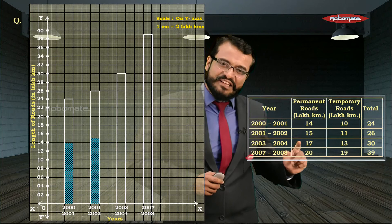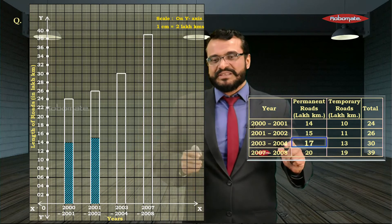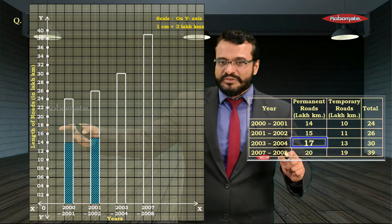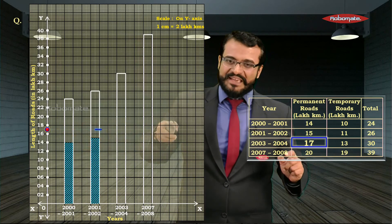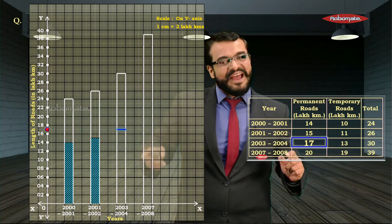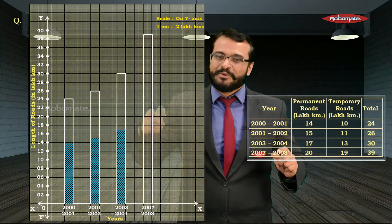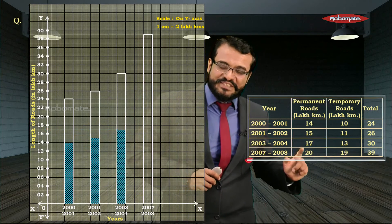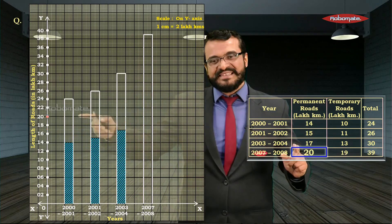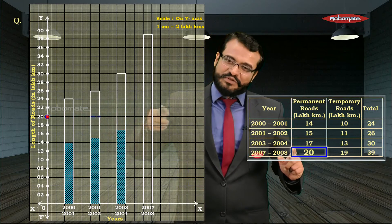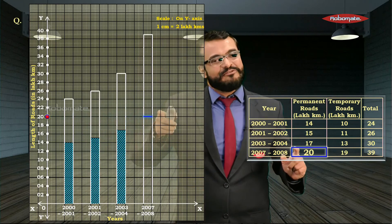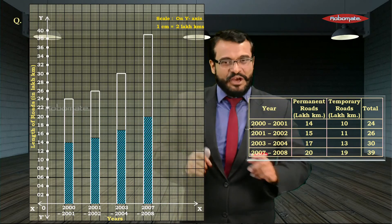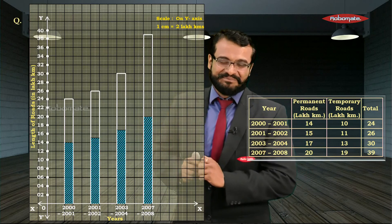For the third year, the length of permanent roads is 17, which lies between 16 and 18 on the y-axis. Mark at 17 and divide the bar into permanent and temporary roads. For the last year 2007–2008, permanent roads = 20, which is directly on the y-axis. Mark at 20 and shade the permanent roads portion.